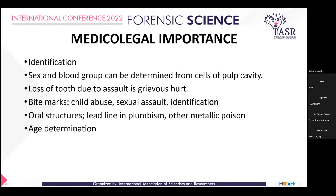Coming to medical-legal importance in the case of bite marks and teeth, it is used for identification of individuals — specifically age and stature. Sex and blood group can be determined from cells of the pulp cavity, and loss of tooth due to assault can be classified as grievous hurt. Bite marks are important in child abuse, sexual assault, and identification of individuals. Oral structures such as the lead line in plumbism (lead poisoning) and other metallic poisons also make teeth significant. Teeth are also important in age determination of an individual.